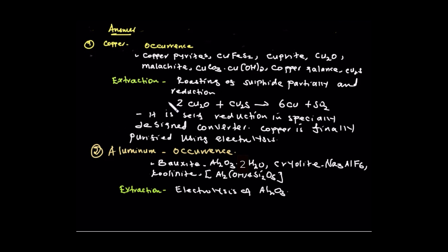The extraction of copper: copper sulfide is roasted to form copper oxide, then copper is extracted. This produces copper, sulfur dioxide. Copper is then purified using electrolysis. This is the roasting of sulfide to extract copper.